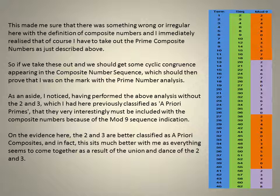As an aside, I noticed how the 2 and 3, which I had classified as a priori primes, that they very interestingly must be included here with the composite numbers because of the mod nine sequence. The 2 and 3 are better classified as a priori composites, and in fact, this sits much better with me as everything seems to come together as a result of the union and dance of the 2 and 3.